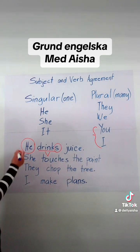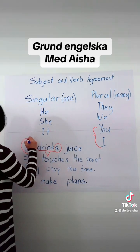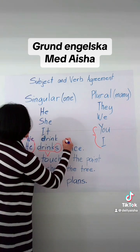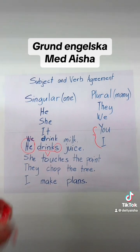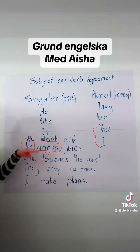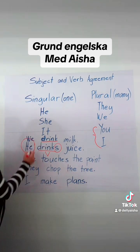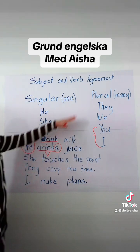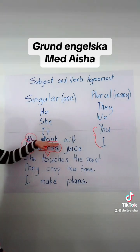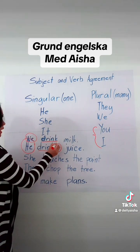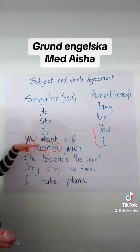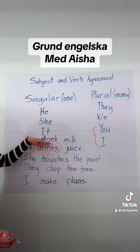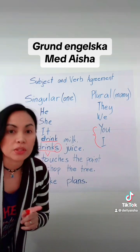If it is plural, for example: We drink milk. So here your verb drink is in plural form — that means without s. We is your subject, which is plural, so your verb doesn't end with s. He drinks. We drink — without s.